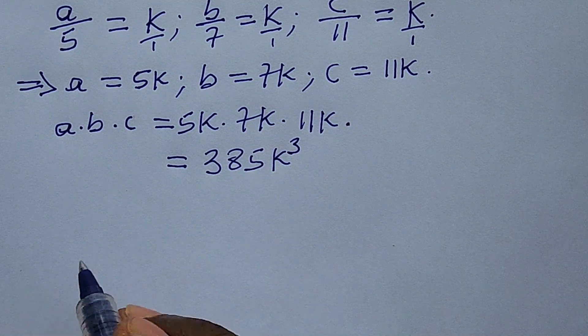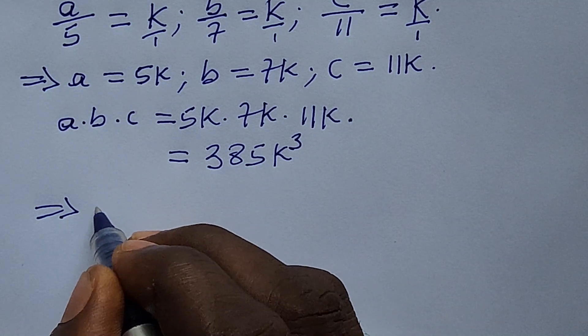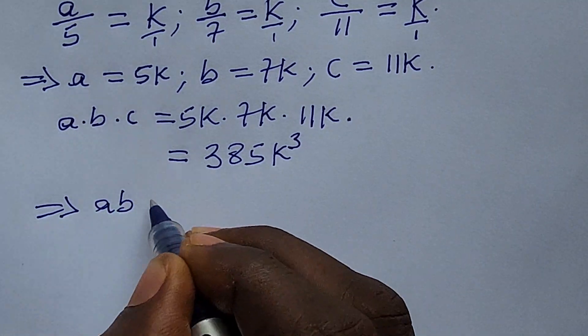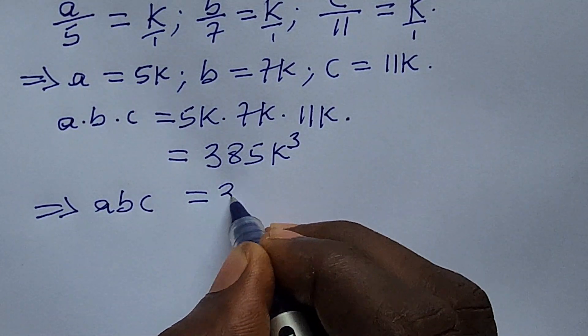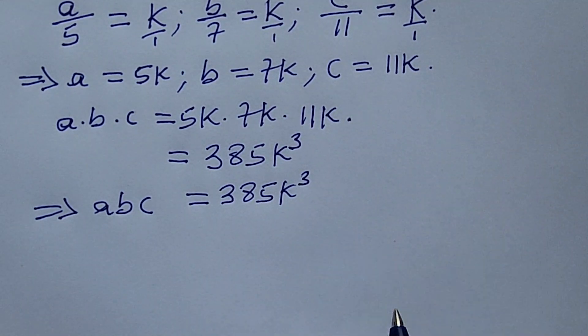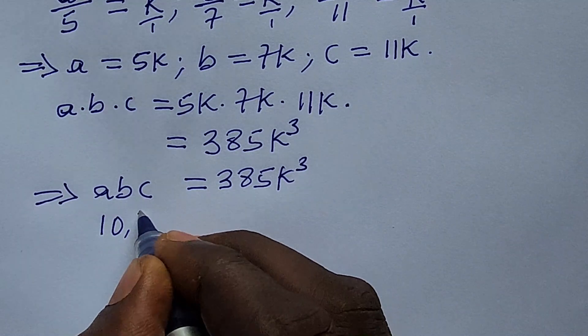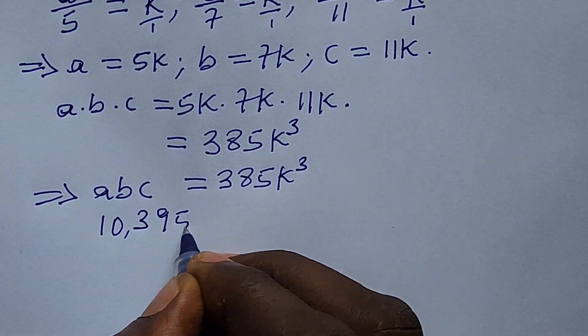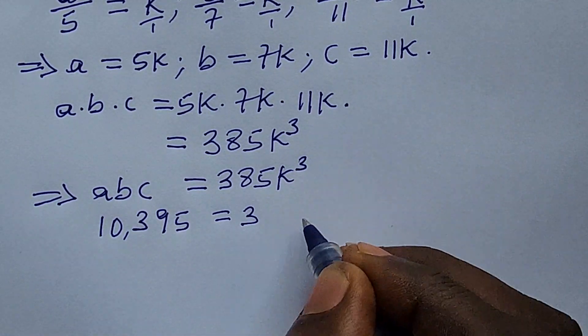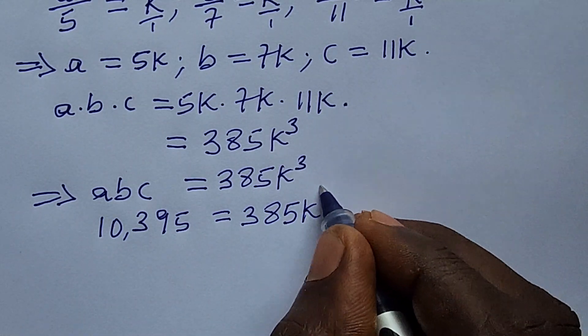This now implies first that our a times b times c is equal to 385k³. Then we now have this to be 10,395 = 385k³.